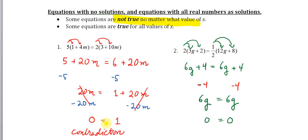The first equation is not true no matter what value of x. It's an equation with no solution—no matter what you put in for m, you're never going to get a right answer. There's no value of m that can satisfy it because you end up with a contradiction when you solve the equation.